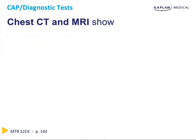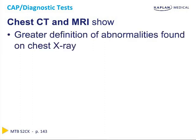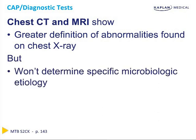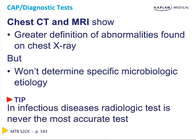Sometimes, if a diagnosis remains elusive, further chest imaging can be obtained with a chest CT or chest MRI. These do show greater definition of abnormalities, but they still do not determine a specific microbiologic etiology. One tip for Step 2 is that in infectious diseases, a radiologic test is hardly ever the most accurate test.